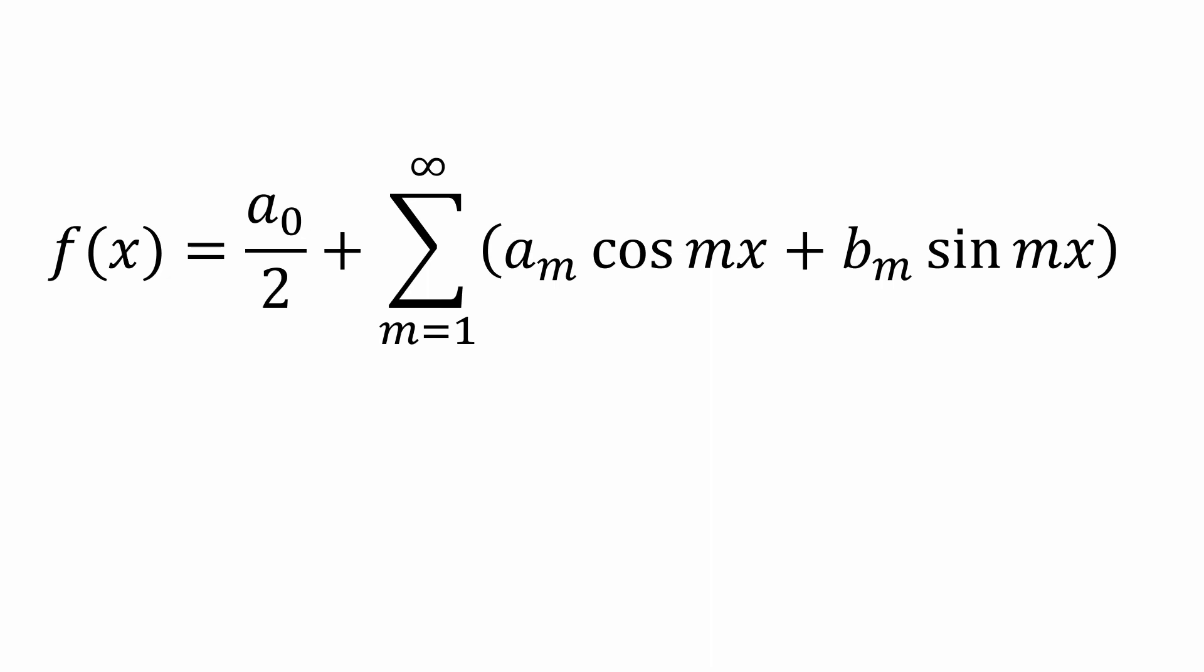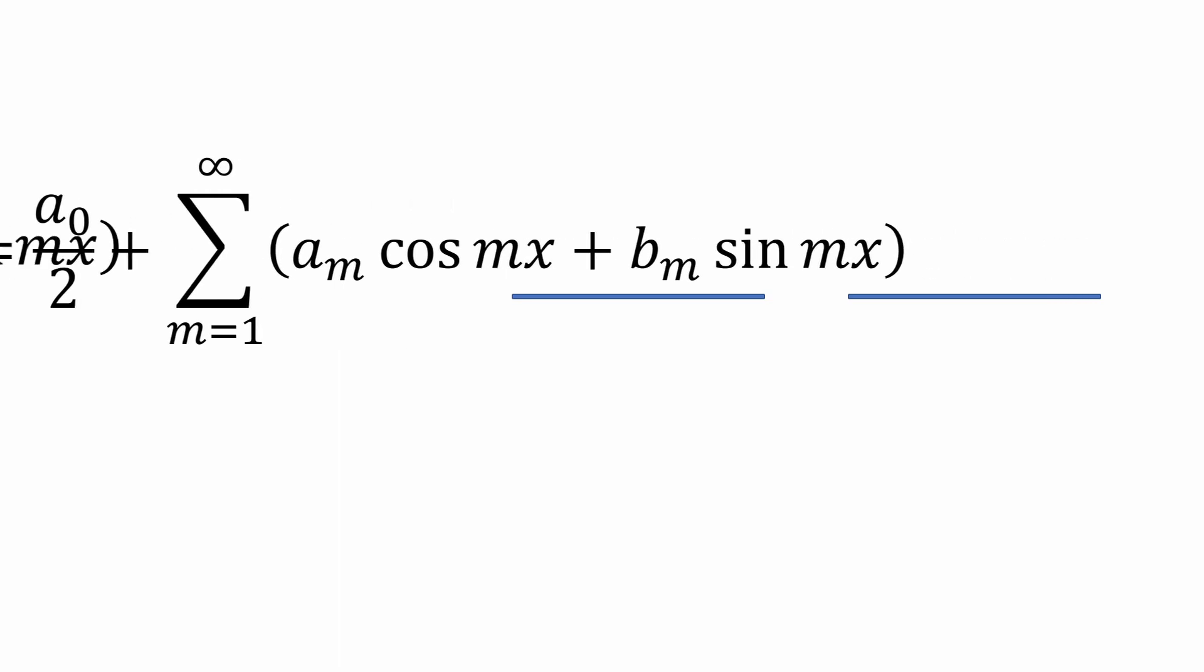If you're familiar with the Fourier series, then you know it's similar to a Taylor series approximation, only the Fourier series uses sines and cosines rather than polynomials. In our case, we're going to determine the Fourier series of a very simple function, x squared.